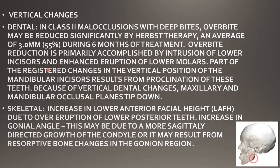The overbite reduction is primarily accomplished by intrusion of the lower incisors. The lower incisors are intruded, and there is enhanced eruption of the lower molars — the posterior teeth get supra-erupted and extruded, while the incisors are intruded. Because of that, the overbite is reduced.